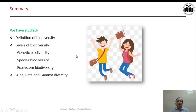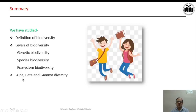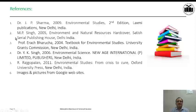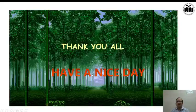We have now come to the end of this discussion. To summarize: we studied the definition of biodiversity, then the levels of biodiversity — Genetic Biodiversity, Species Biodiversity, and Ecosystem Biodiversity — and towards the end, alpha, beta, and gamma diversity calculations. Some standard book references have been provided for your further studies. Thank you, and have a nice day.